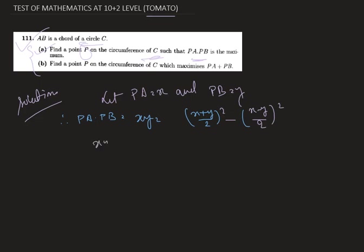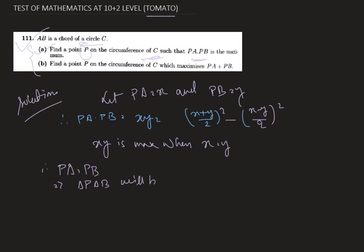Now XY is maximum when X equals Y. Therefore we can say that PA equals PB. This implies triangle PAB will be an isosceles triangle.